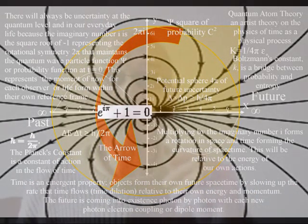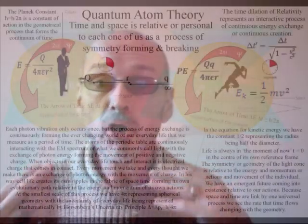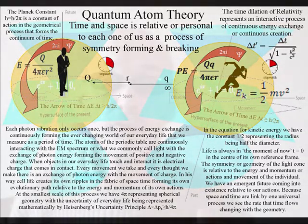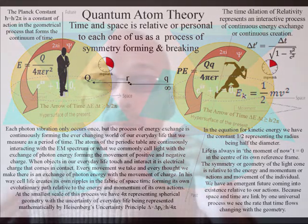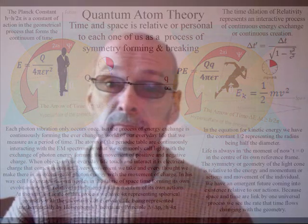Within such a process the future would not come out of the past, it would come out of the present moment relative to each object and life form. The future is unfolding relative to our position and the energy and momentum of our actions, with the light of fire and the beauty of the rose being part of one universal process.